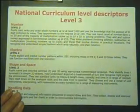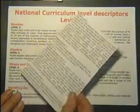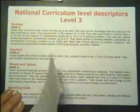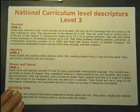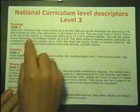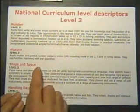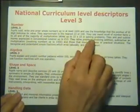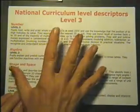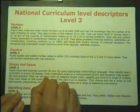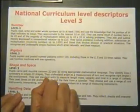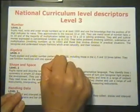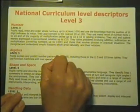Included with the DVD is a copy of the level descriptors at Level 3. There are four areas of study: number, algebra, shape and space, and handling data. The basic concepts required in all these areas are covered in the revision video. However, it cannot be expected that every possible interpretation of the level descriptors will be covered in the time available on the DVDs.